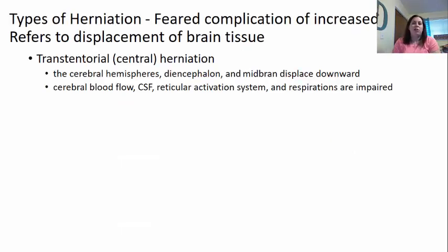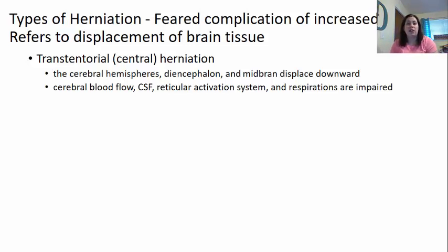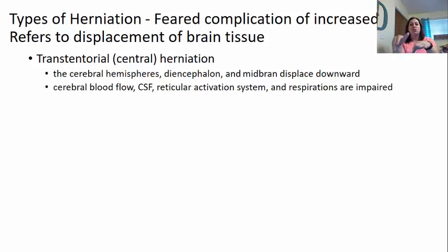When intracranial pressure increases dramatically, we see that herniation can take place. Herniation is a complication of increased intracranial pressure and there are several types depending on where the displacement of brain tissue takes place. The first is transtentorial or central herniation, where the cerebral hemispheres and the diencephalon, which is below in the midbrain, all get pushed downward. The pressure is normally up top and it's pushing the whole brain downward.